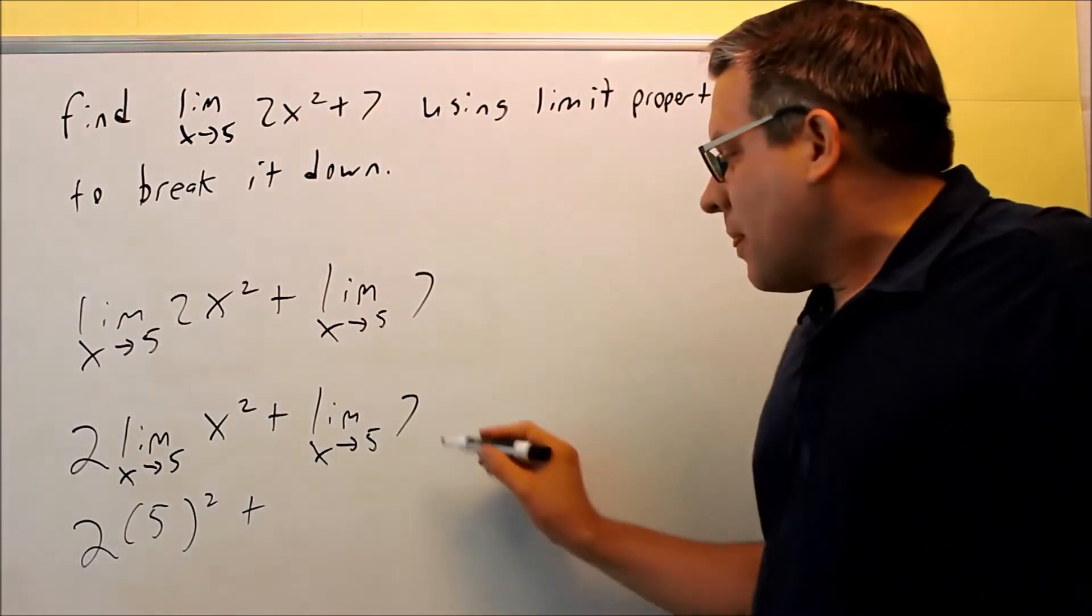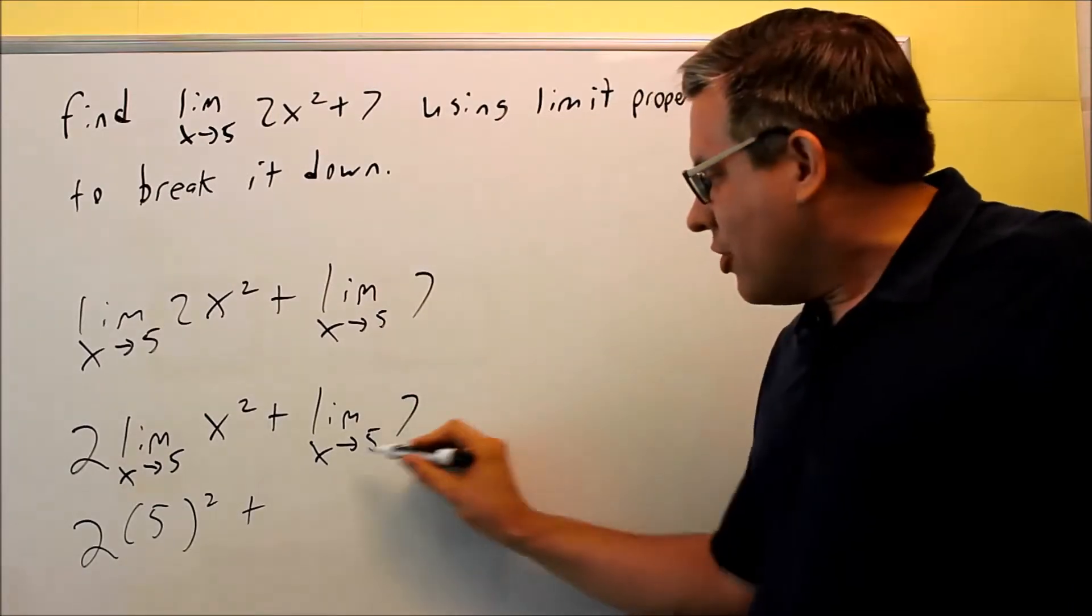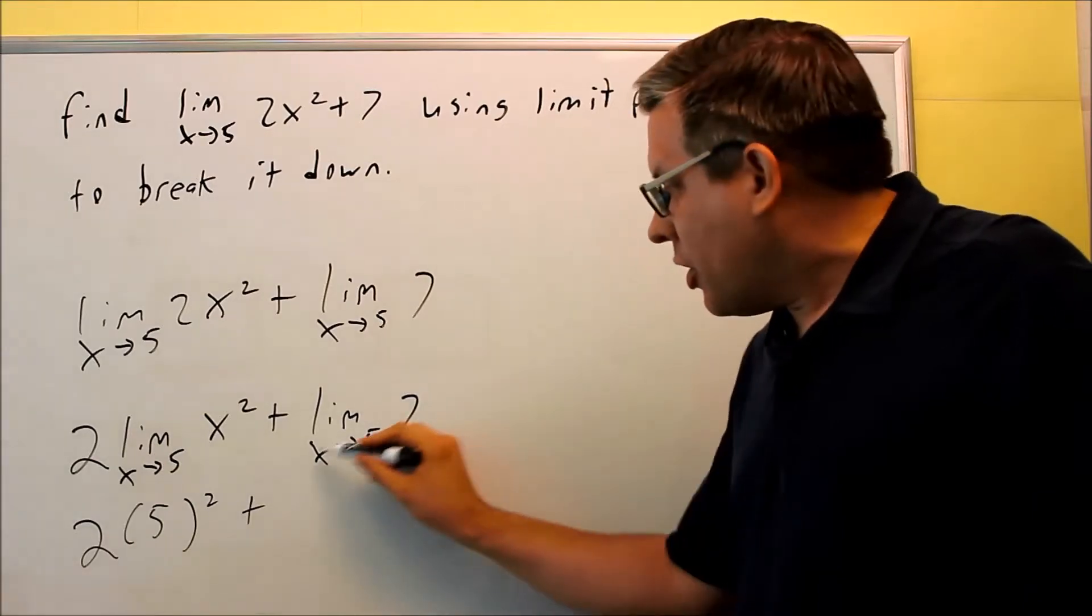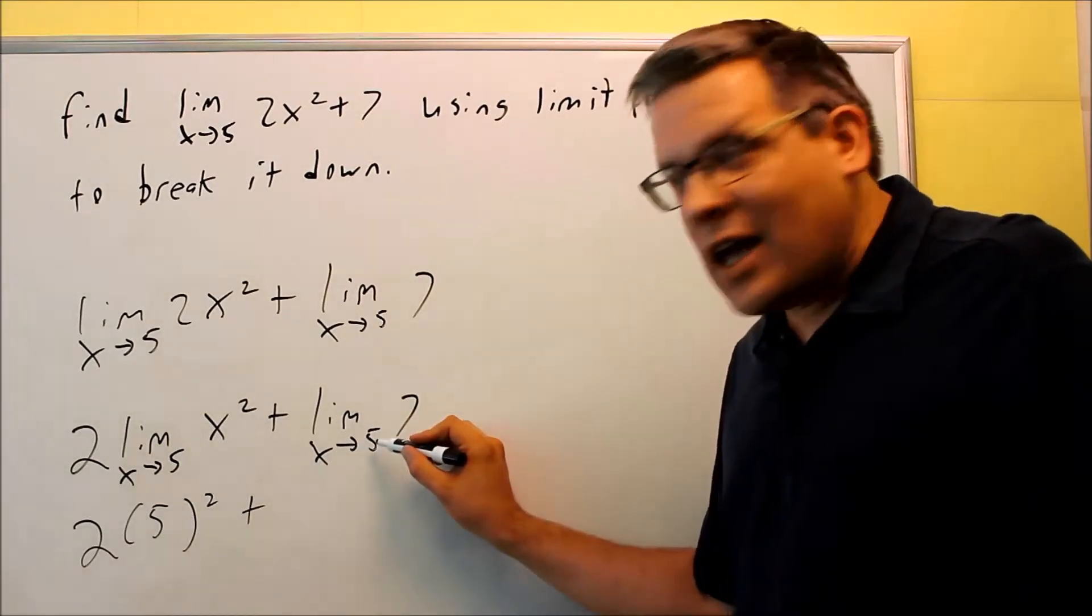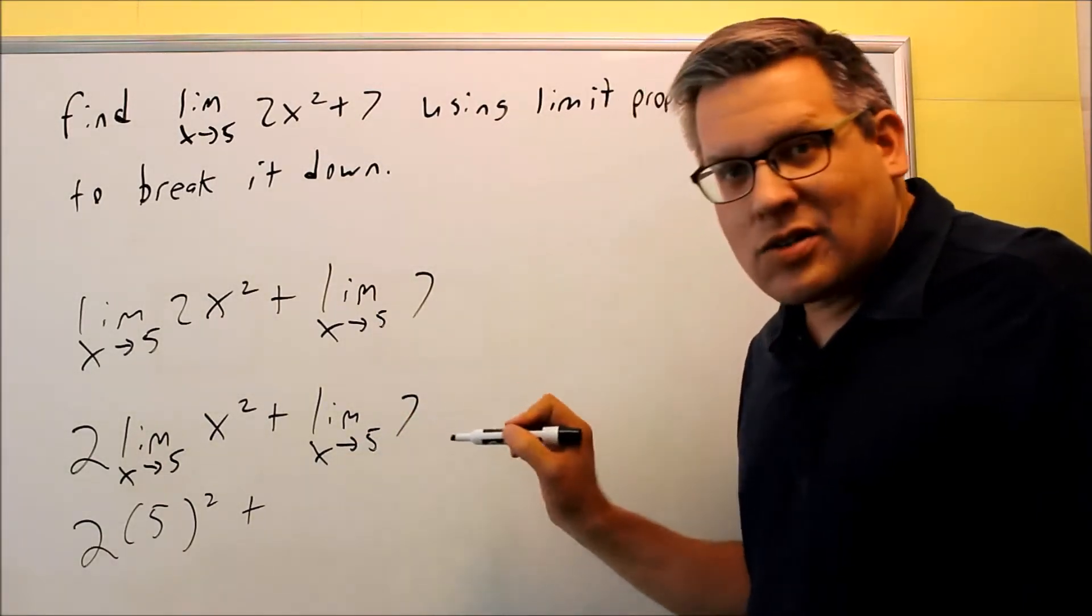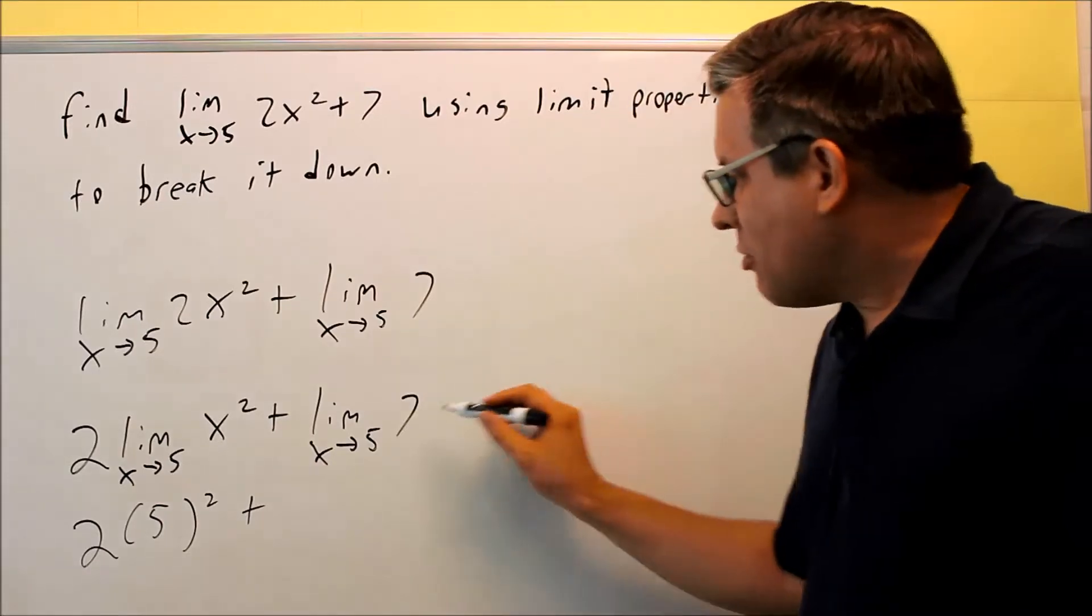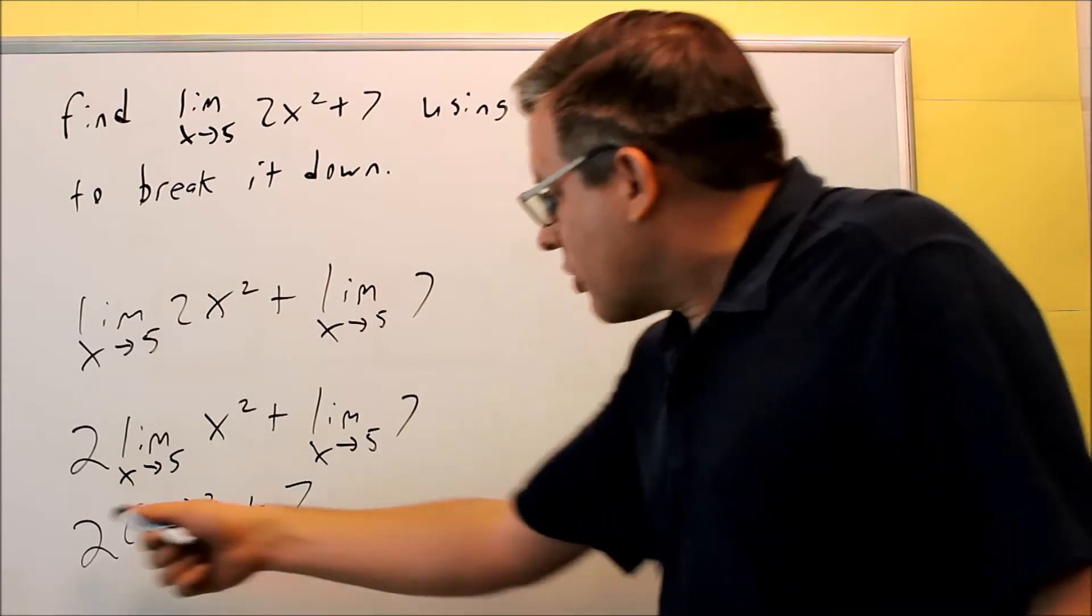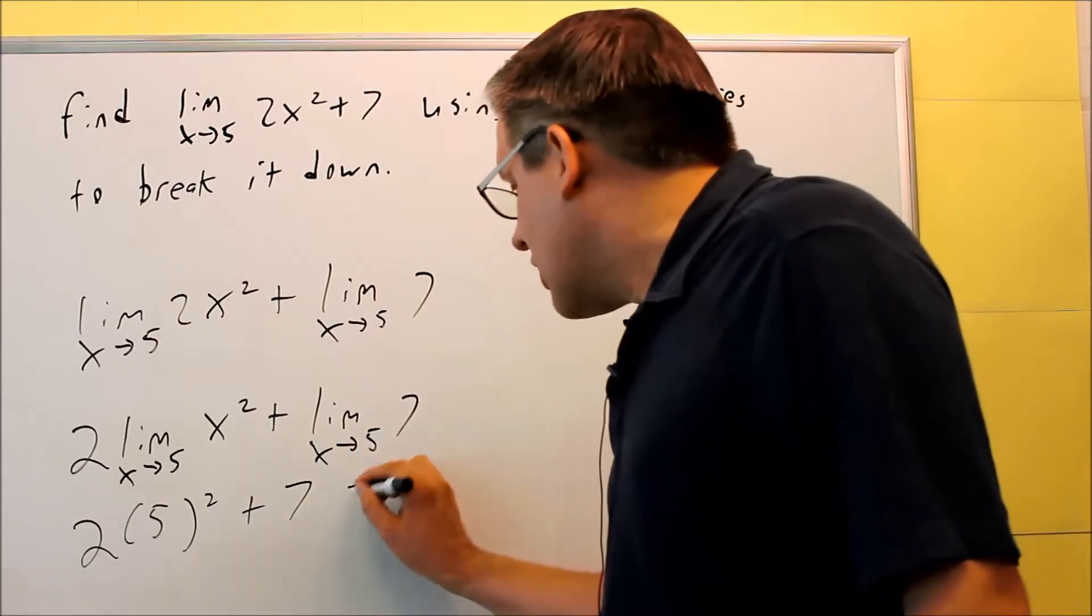For this one, if it's always 7, one of the properties says that if this is a constant, no matter what value you approach here on x, you're just going to end up getting the constant. So it means that this is always going to equal 7, and so then we can just work this out and we get 57 as the answer.